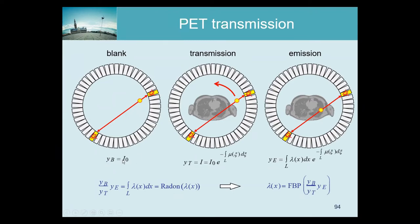We call that measurement the blank scan — it measures how many photons you see with that transmission source if there is no patient. The transmission source is germanium-68, which has a half-life of nine months, so the decay between the blank scan and the transmission scan of that day is basically negligible.